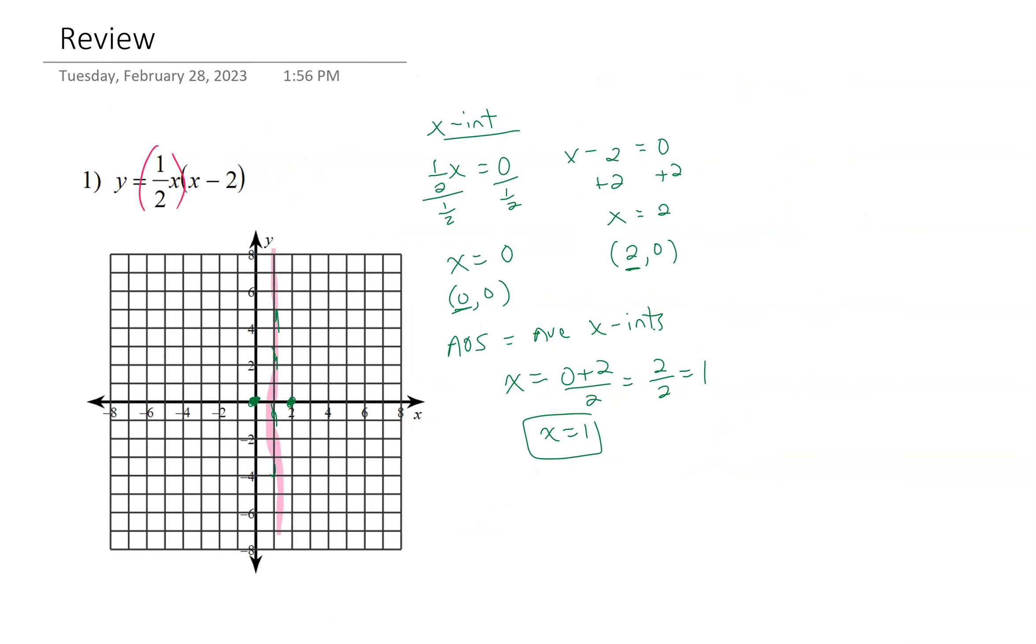Now once we've done that, we're ready to find the vertex itself. We know the vertex is on the axis of symmetry. So you're going to take that value for the axis of symmetry and plug it back into the original equation, 1 half x times x minus 2.